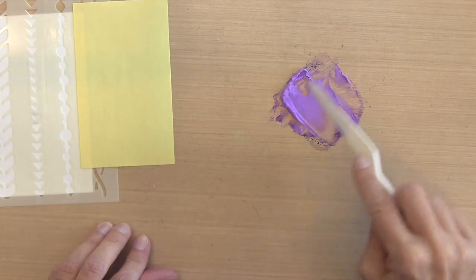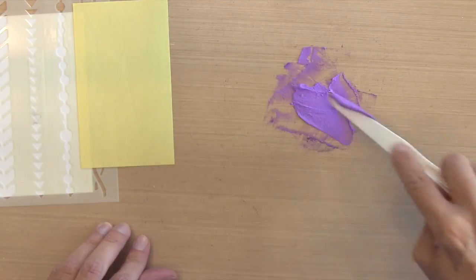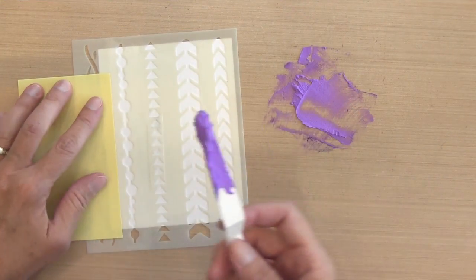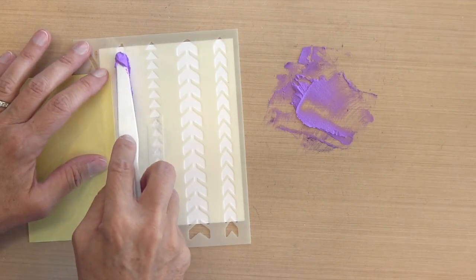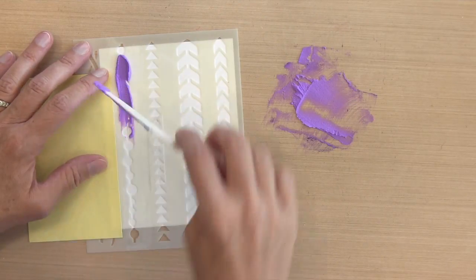I'm going to take my palette knife, get some on the bottom, and I'm going to smear it onto my cardstock. You'll notice that this is kind of awkward for me because I'm right-handed, my palette knife has a bunch of paste on it.